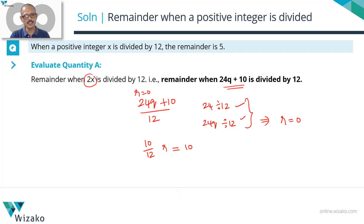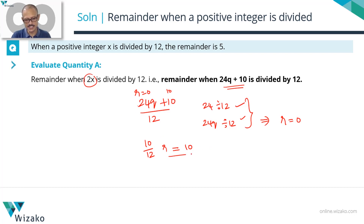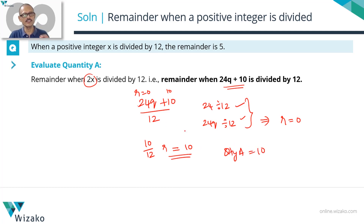So: 24q divided by 12 gives remainder 0, and 10 divided by 12 gives remainder 10. Therefore, when 24q + 10 is divided by 12, the final remainder is 10. The value of Quantity A is 10.